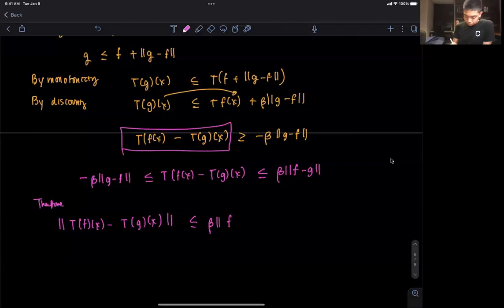Therefore, we can rewrite this as a norm. This is going to be ||T(f)(x) - T(g)(x)|| less than or equal to beta times this norm. So this is from basically this part here, we can make the norm ||f(x) - g(x)||.